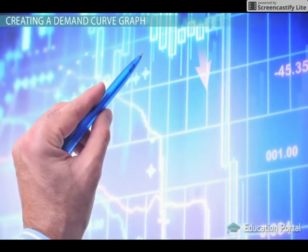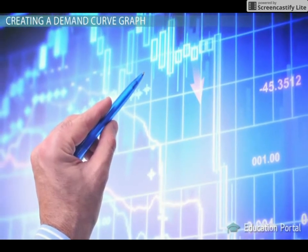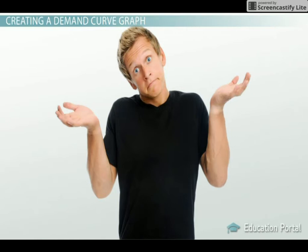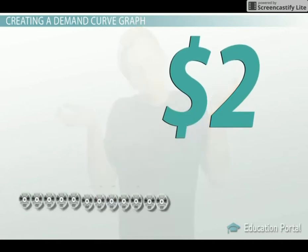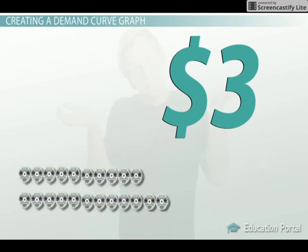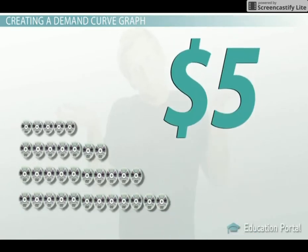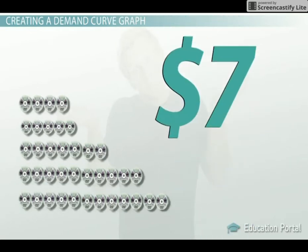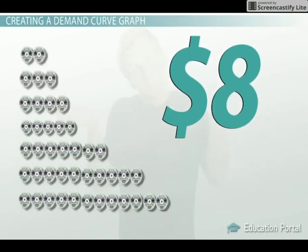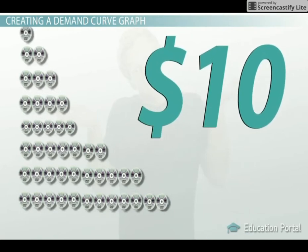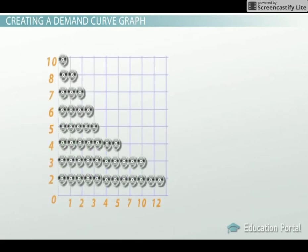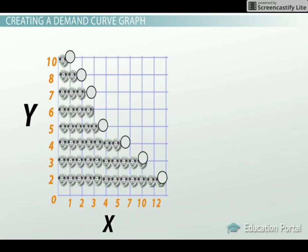To think about how an individual demand curve is created, we need to first determine how much of a product a person is willing to buy at certain price points. For example, let's explore Jerry's demand for DVDs. At a price of $2, Jerry will buy 12 DVDs a month. At $3, 10 DVDs. At $4, 7 DVDs. At $5, Jerry will buy 5 DVDs. At $6, 4 DVDs. At $7, 3 DVDs. At $8, 2 DVDs. And at $10, Jerry will buy just 1 DVD a month. If we then create a simple graph with price on the y-axis and quantity on the horizontal or x-axis, we can plot each individual point on the graph and then connect the points. You now have a demand curve.